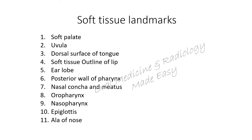What are those soft tissue landmarks? They are: soft palate, uvula, dorsal surface of tongue, soft tissue outline of lip, earlobe, posterior wall of pharynx, nasal conchae and meatuses, oropharynx, nasopharynx, epiglottis, and ala of nose.